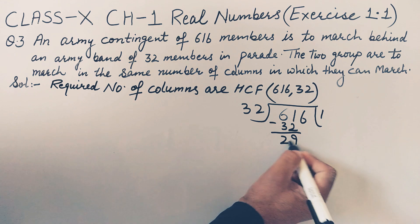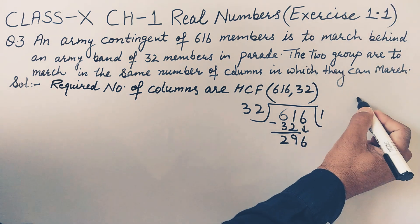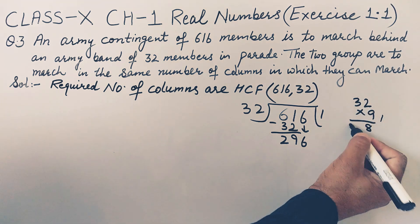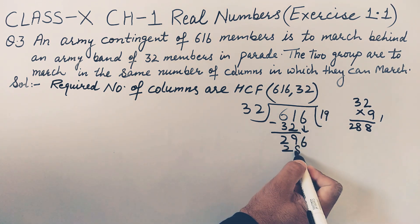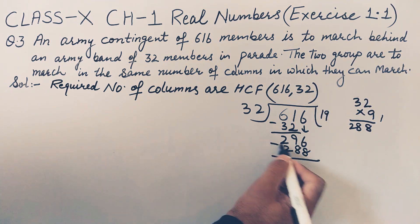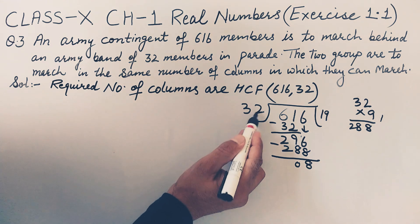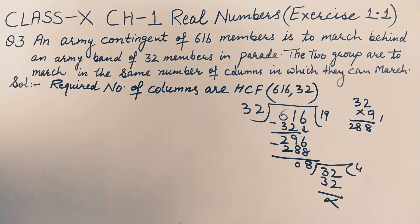Bring down this 6 also. Now 32 nines are 9 to 18, 9 to 27, 28, so it is going with 9 only, 288. Minus it, 16 minus 8 is 8, 8 minus 8 is 0. So 8 is left. Now bring this divisor as a dividend here. It is going with 8, 4 eights are 32.